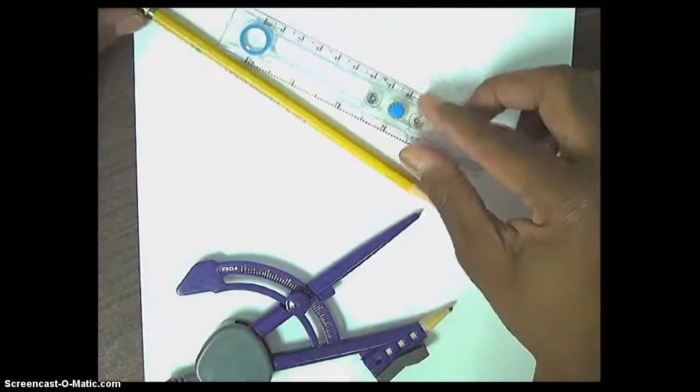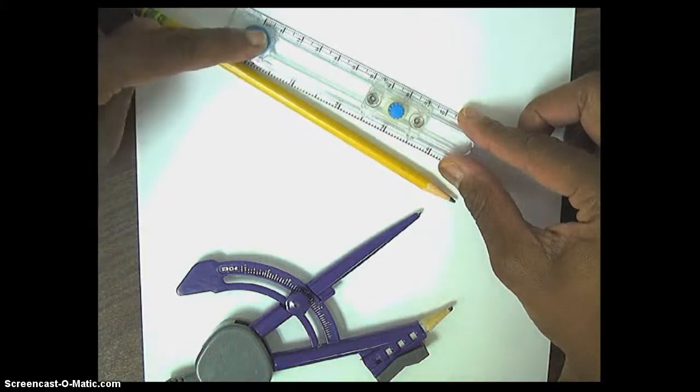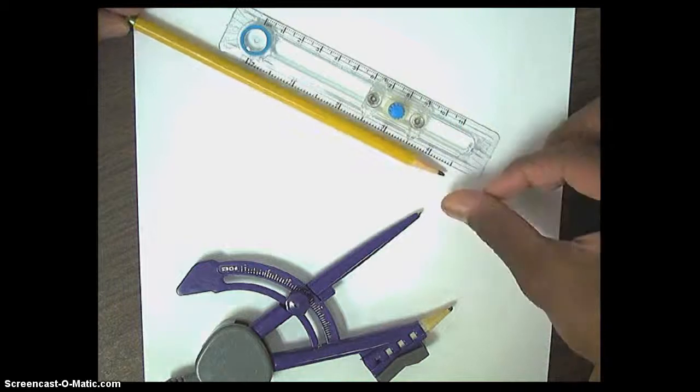What you need to know is this is basically a ruler-type compass, and it has a disc, and you're going to need a pencil that is relatively sharp.